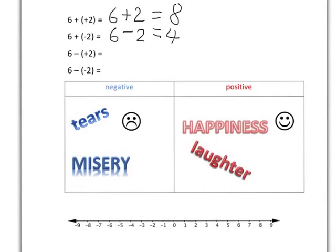The next one: I'm going to take away the positive stuff — taking away happiness and laughter from my life. Obviously, if I take away those positive things, my life is getting less; I'm taking away from my life. And then the last one: if I take away the negative stuff — the misery, the tears, the unhappiness — obviously my life is getting better; it's like I'm adding to my life.